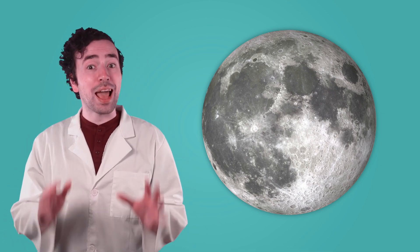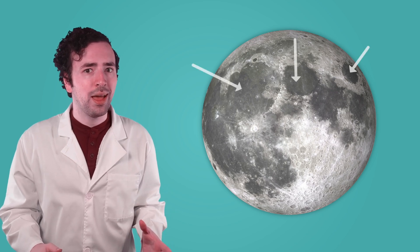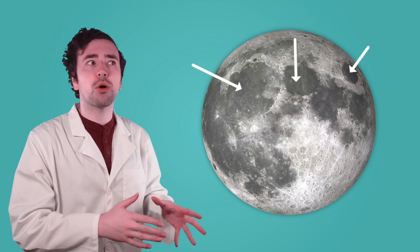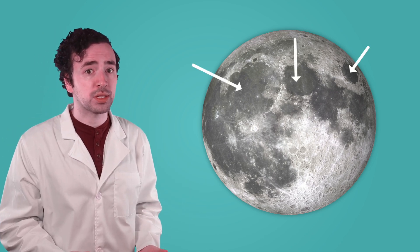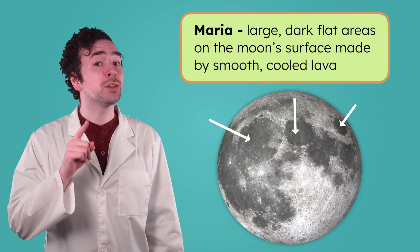So far, we've seen the moon's oldest, roughest highlands, and the craters left behind by powerful impacts. But not every part of the moon looks like that. Take a look at the large, dark, flat areas on the moon's surface. Those are called maria.